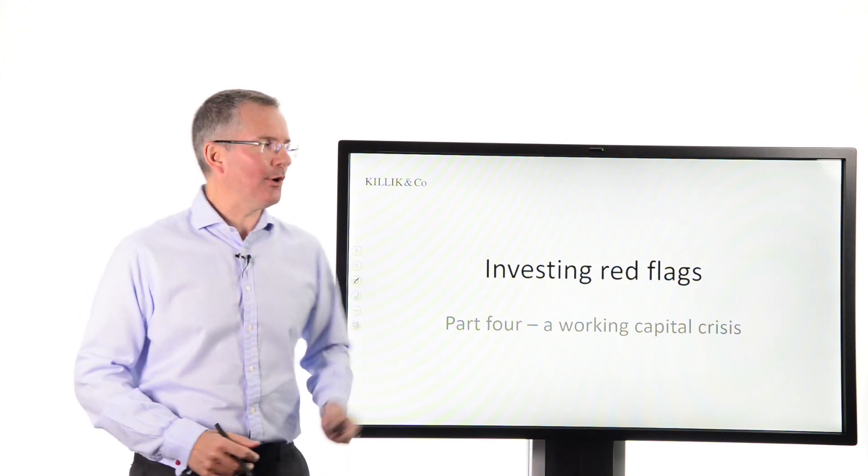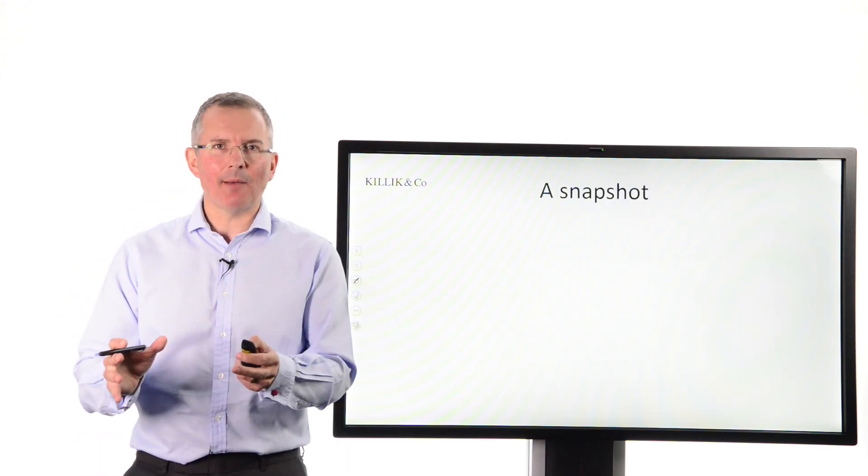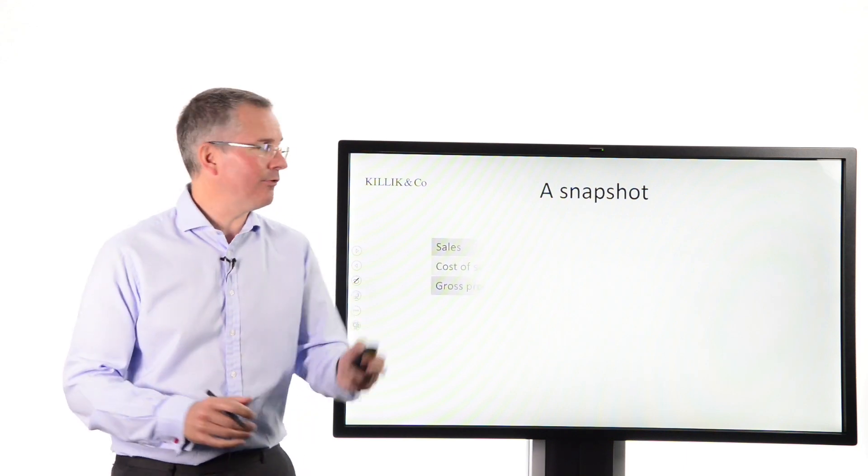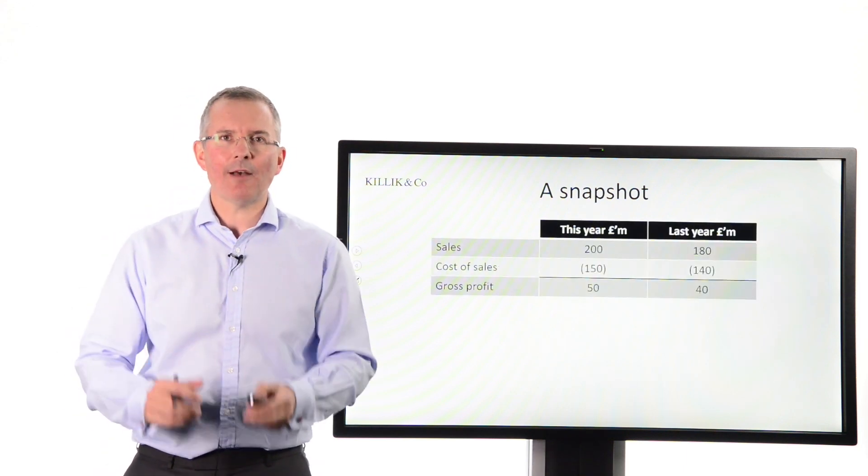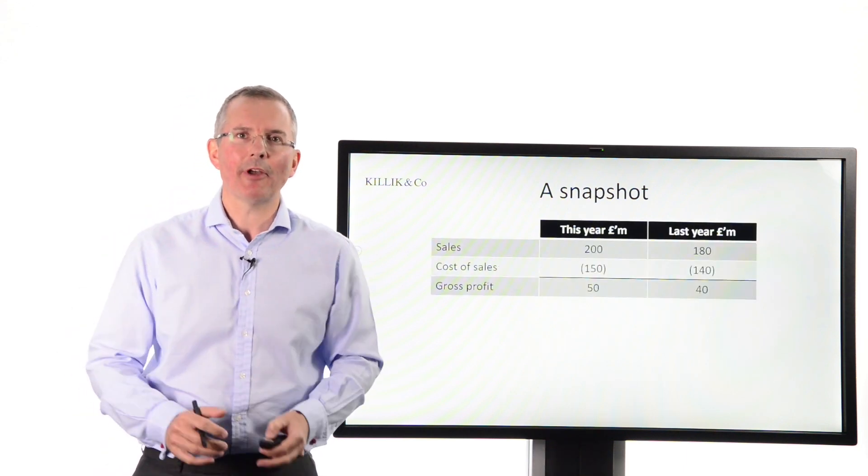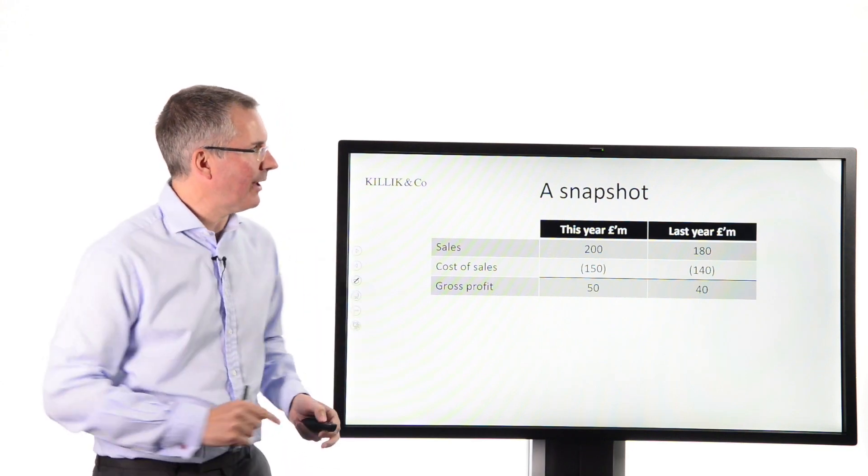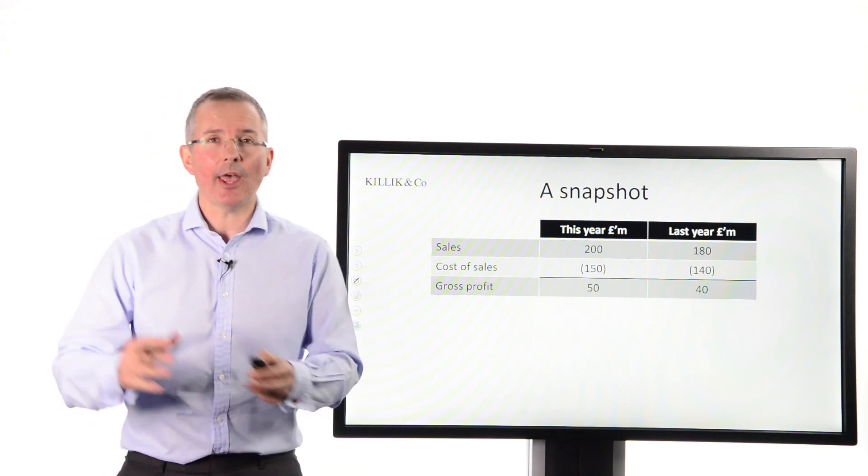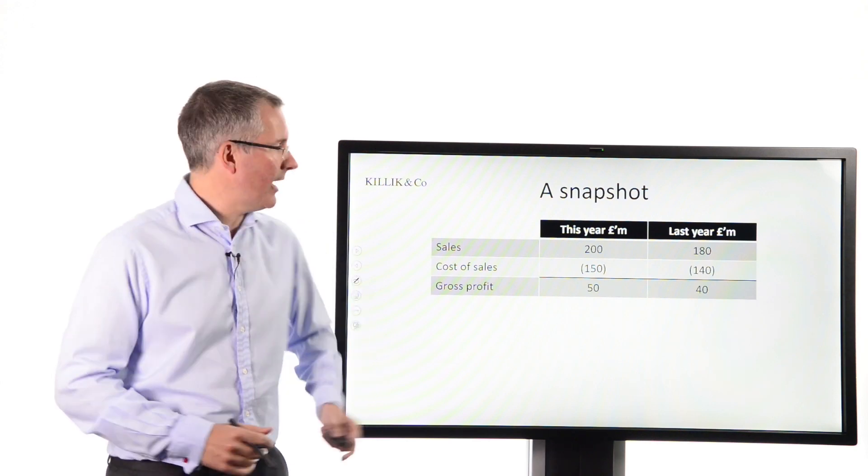So with no more ado, a snapshot of a company. Now what I've done here is to present you first of all with the profit and loss account for two years, a really shortened profit and loss account. We've just got the sales numbers for this year and last year, nice trend there, sales up a little bit on last year.